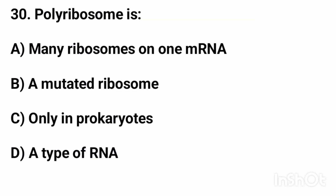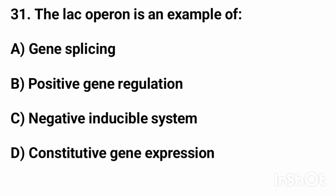Question number thirty: a polyribosome is? The right answer is option A, many ribosomes on one mRNA. Question number thirty-one: the lac operon is an example of? The right answer is option C, a negative inducible system.